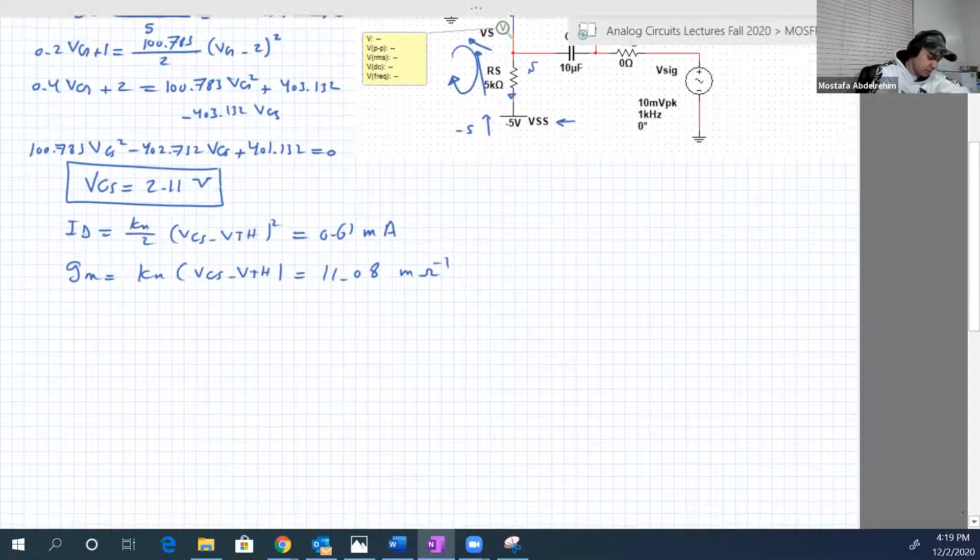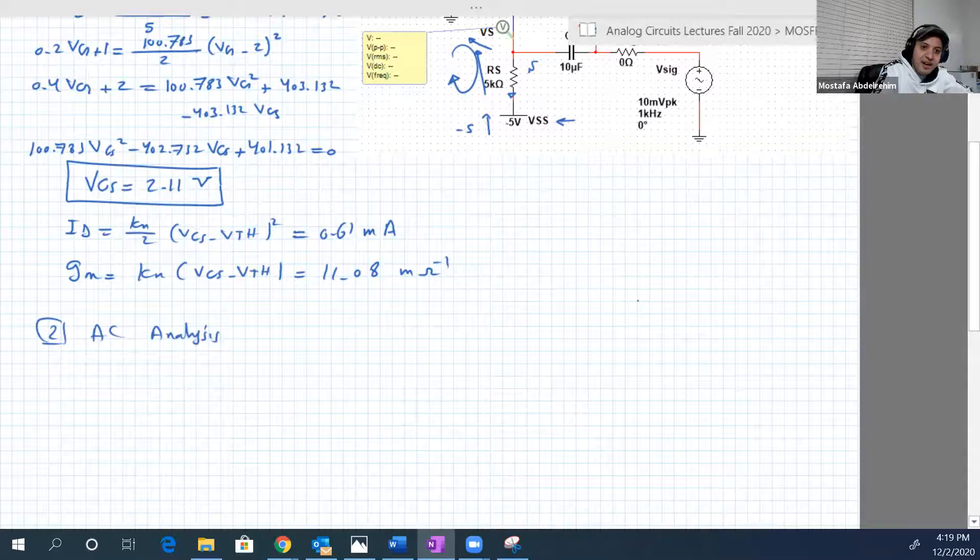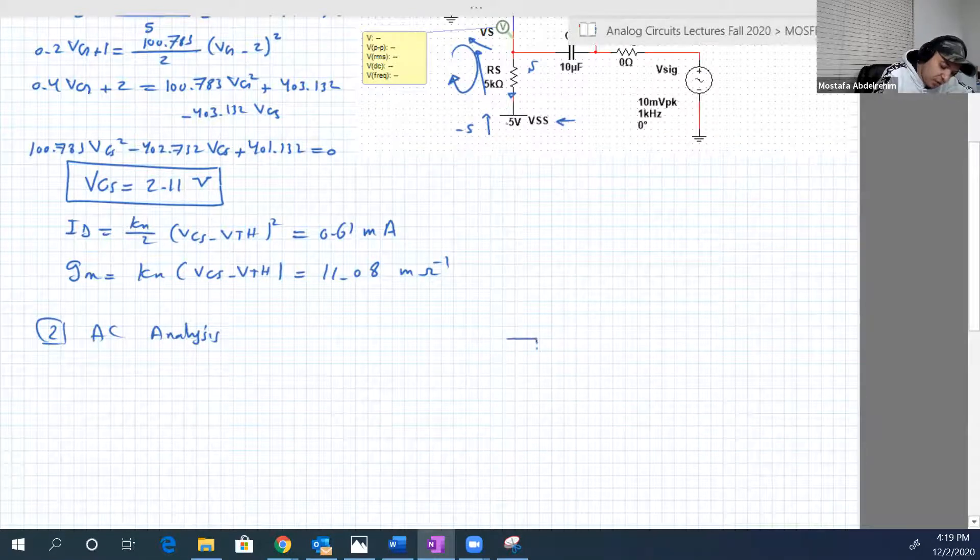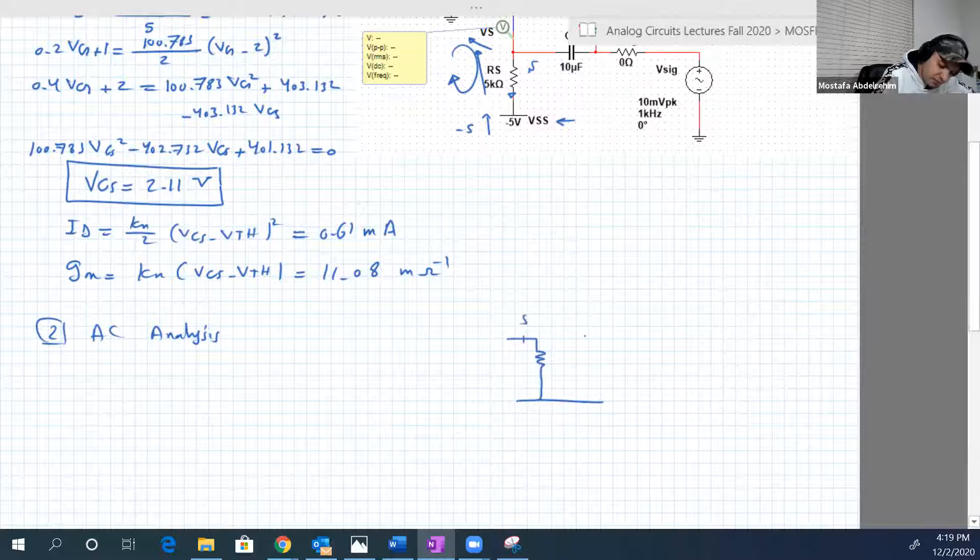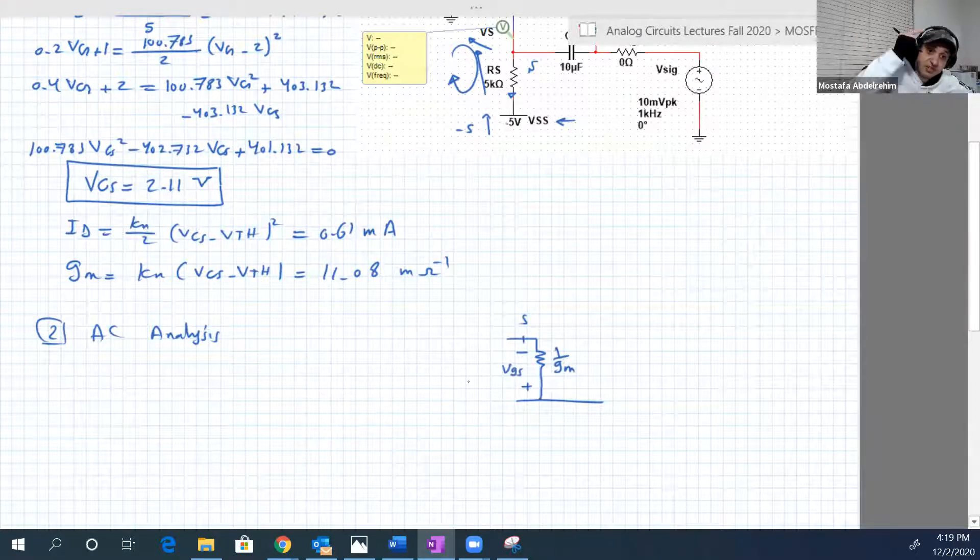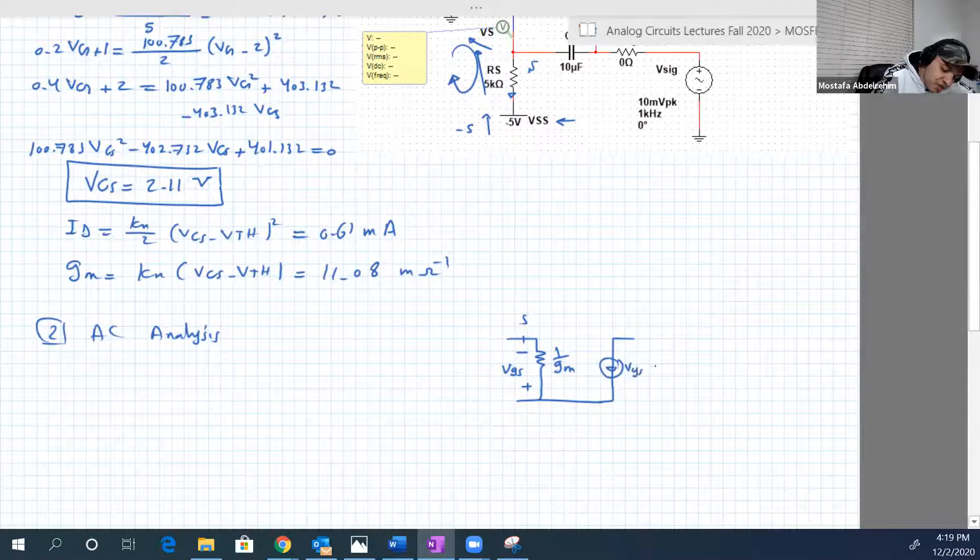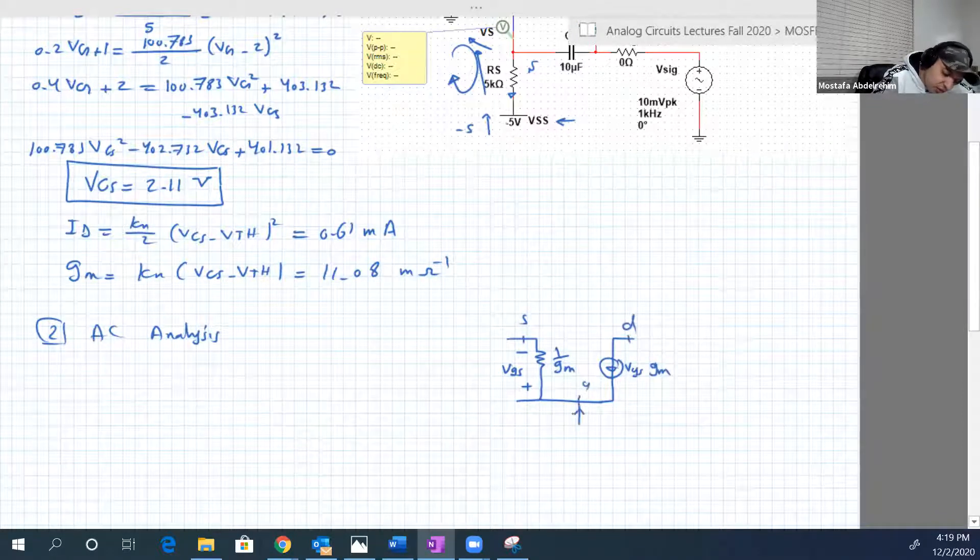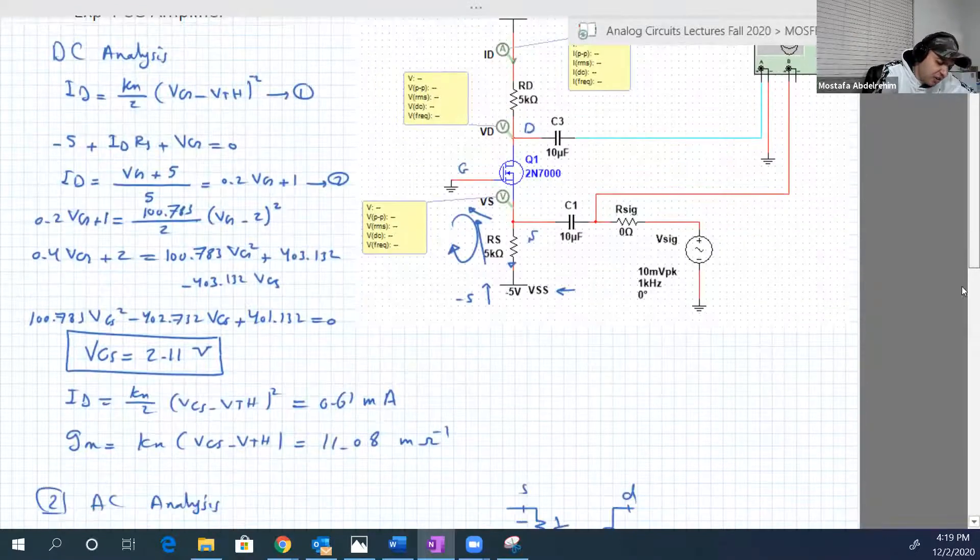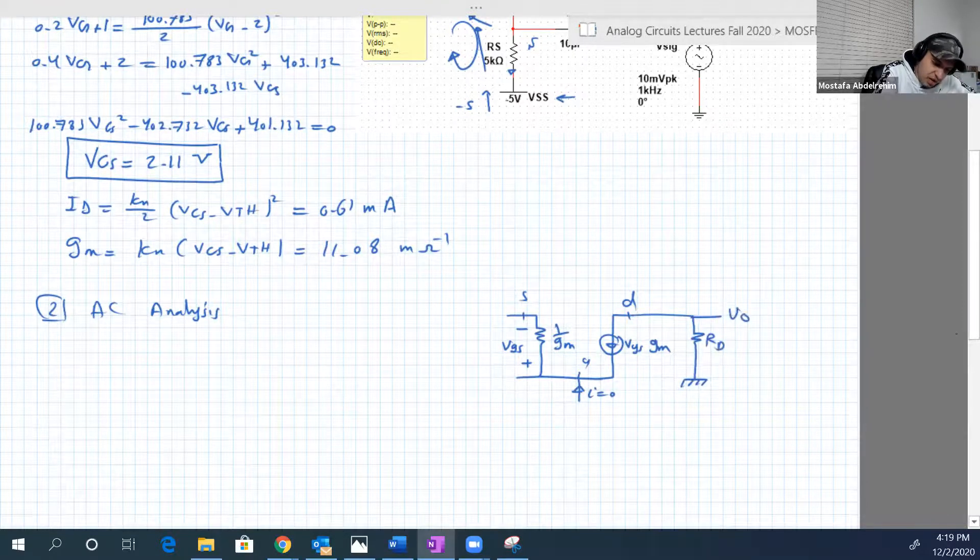Now the AC analysis. So we're going to draw, here is usually with common gate, it's good to use the other version of the equivalent circuit in which you have 1 over GM. So we have source, here 1 over GM, and plus minus VGS in that direction from top to down. Then you have VGS times GM here, and here is the drain, here is the gate.